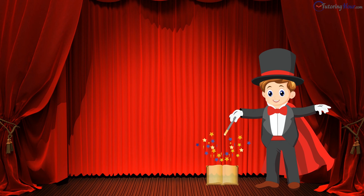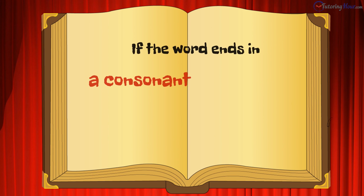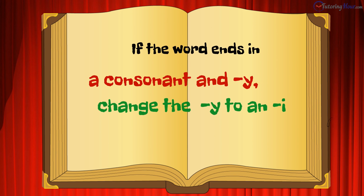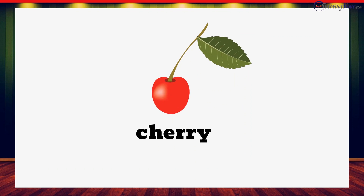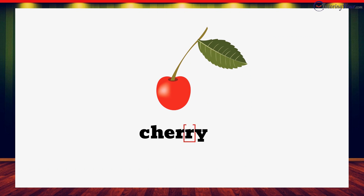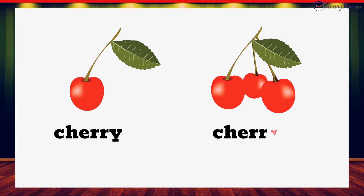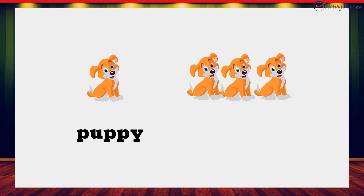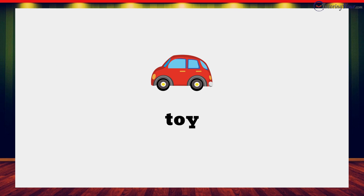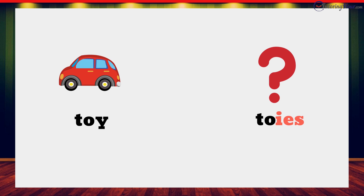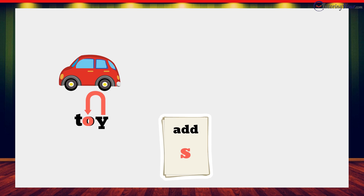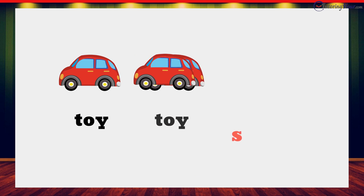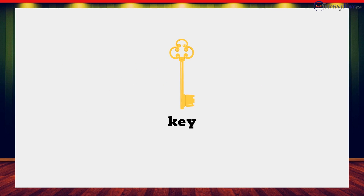Aaron swipes his wand and there comes another trick. If the word ends in a consonant Y, change the Y to an I and add ES. The word cherry has the consonant R right before the Y, so we'll change the Y to I and add ES — that makes cherries. And the puppy becomes puppies. The toy? Why didn't it work? When there's a vowel before the Y, add an S. So toy becomes toys, and the key turns into keys.